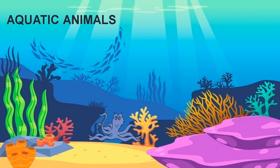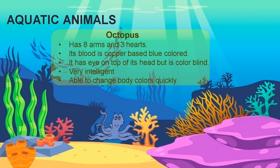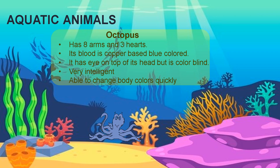It's an octopus. So octopus has eight arms and three hearts. Its blood is copper-based and blue colored. It has eyes on top of its head, but it is colorblind. They are very intelligent. They are also able to change body colors quickly.